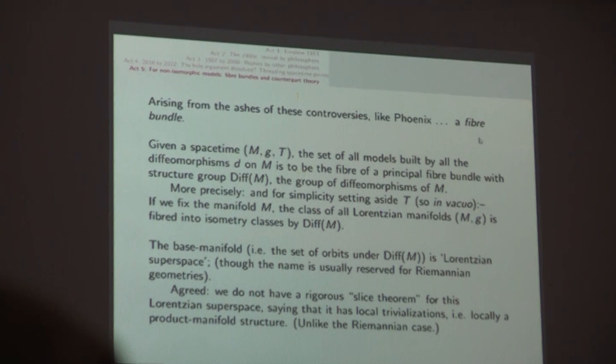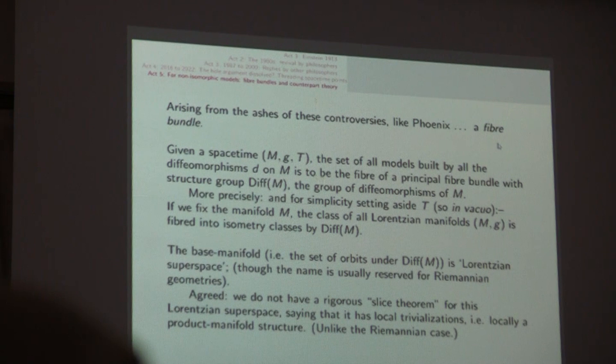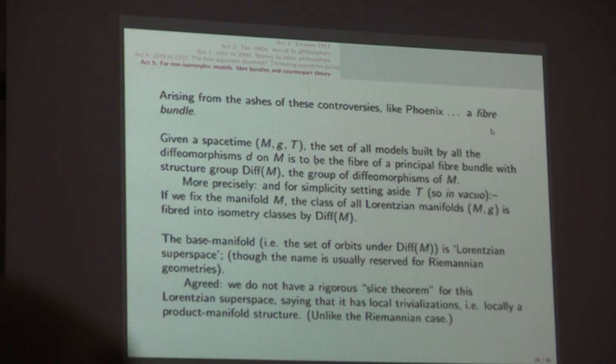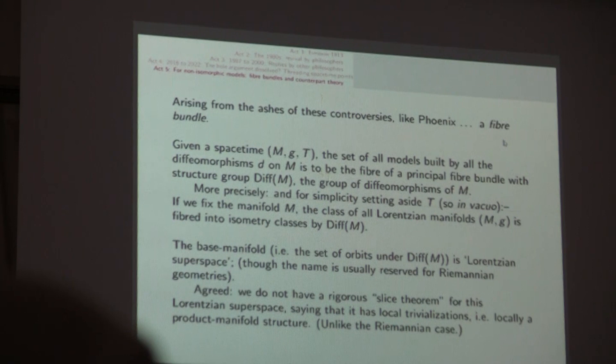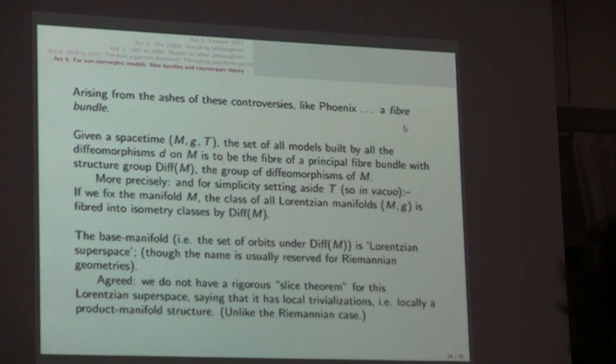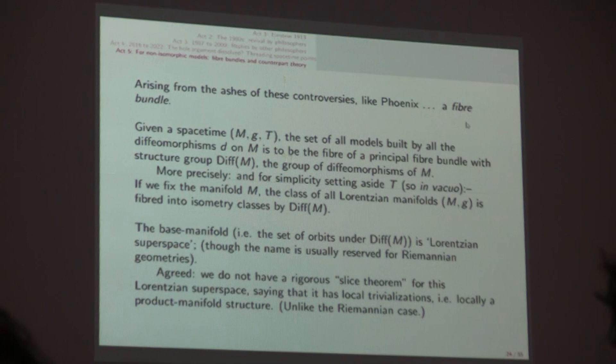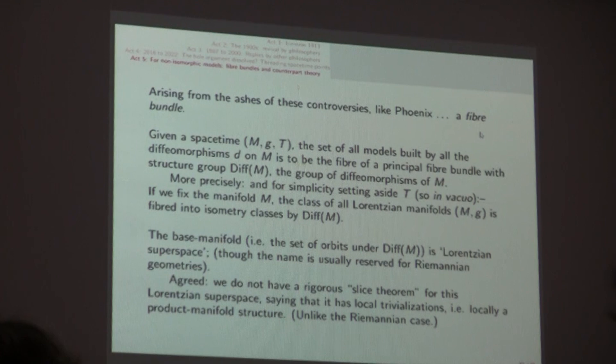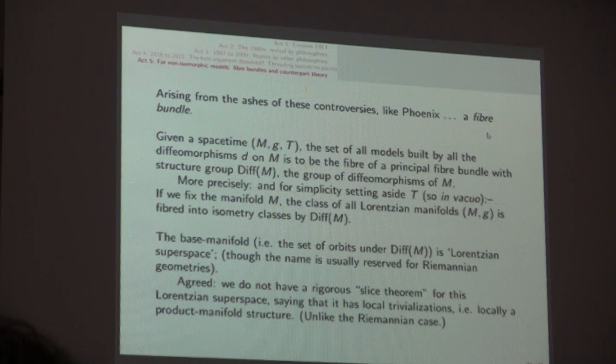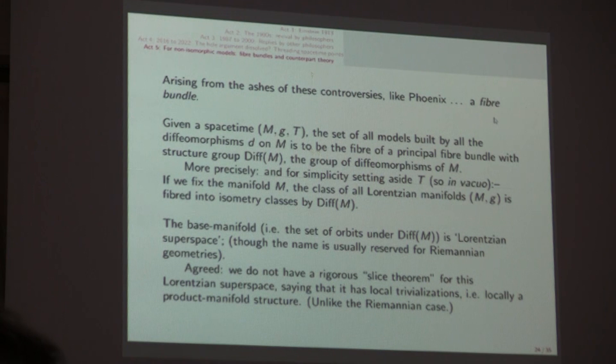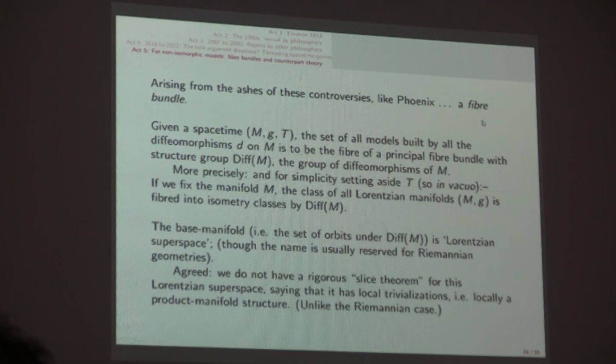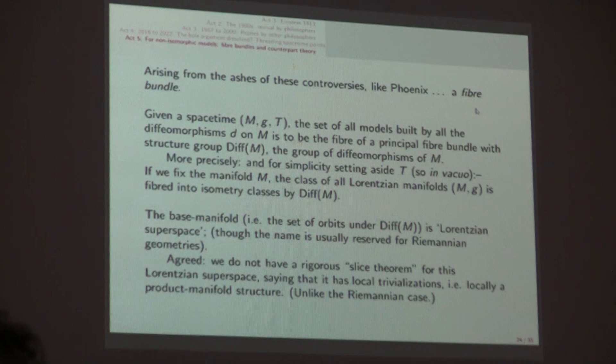Given a spacetime M, G, T, the set of all models that are built by all the diffeomorphisms little d on N, and meaning with the drag-along of the metric and the capital T, the set of all models is going to be the fiber of a principal fiber bundle. The structure group that slides you up and down the fibers is the diffeomorphism group of the background fixed once and for all spacetime manifold M. So, let's set aside T and work in vacuo, so we'll just talk about Lorentzian manifolds. If you fix the manifold M, the class of all the Lorentzian manifolds is fibered into isometry classes by diff.